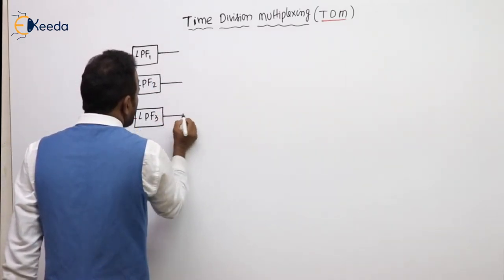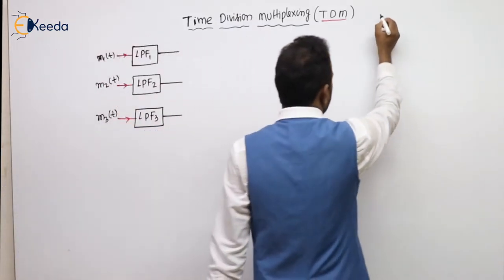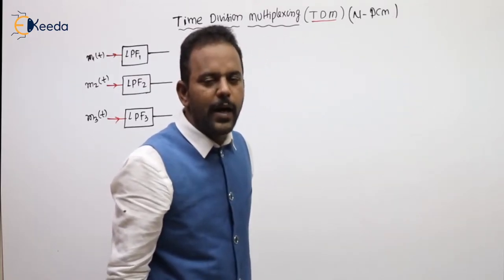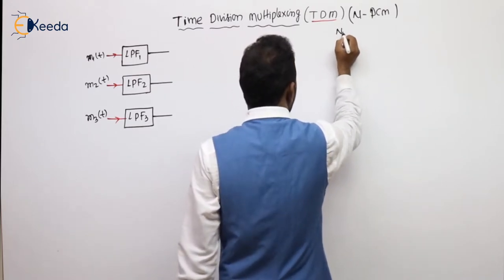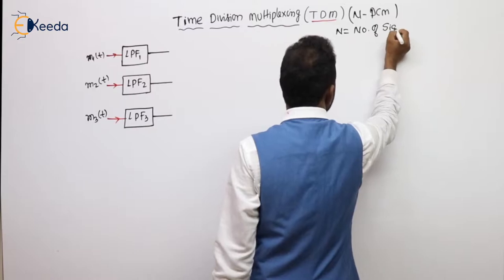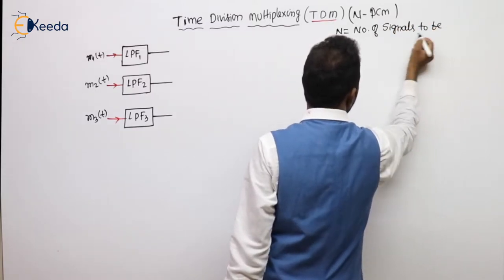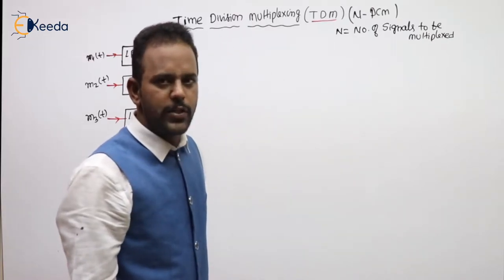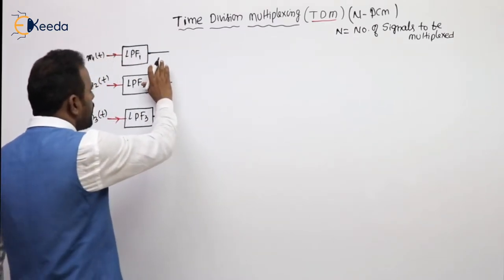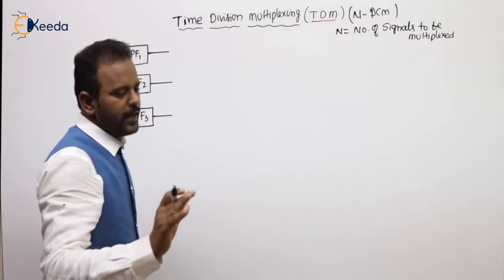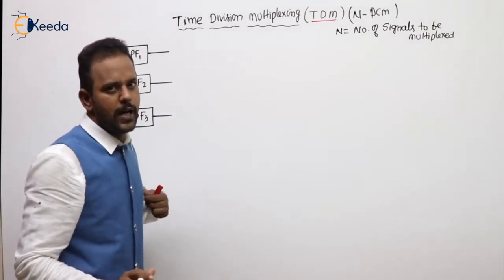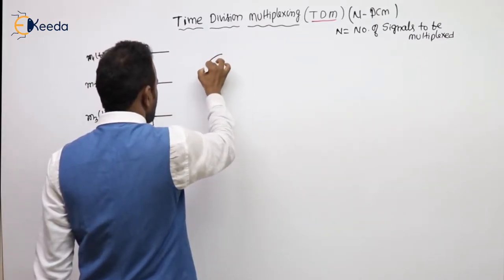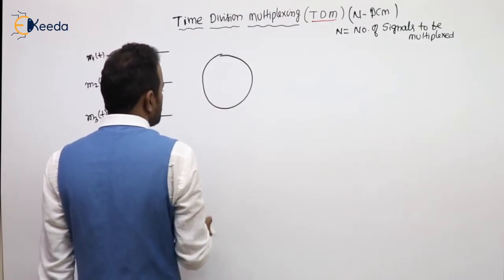The next block after the low pass filter is PCM, because TDM is nothing but PCM only. Here we call it N-PCM, where capital N is the number of signals to be multiplexed. After the low pass filter and PCM, the next block is the sampler. The sampling operation as well as the multiplexing operation will be done by one switch, which is called the commutator.